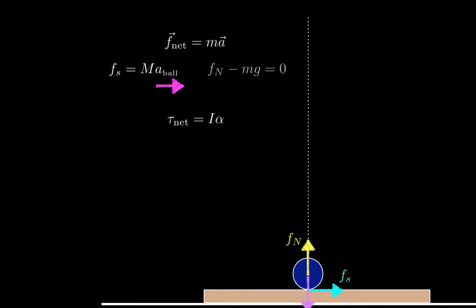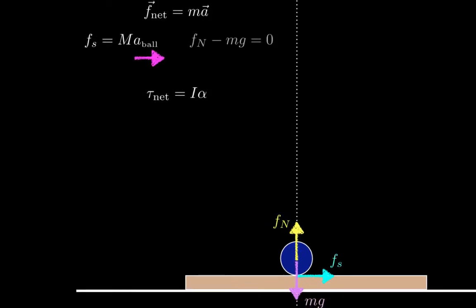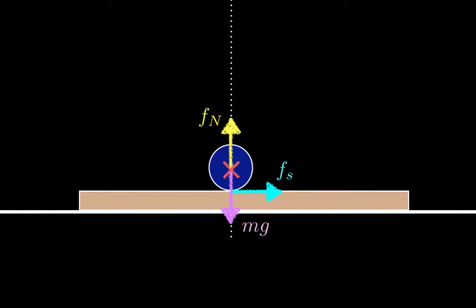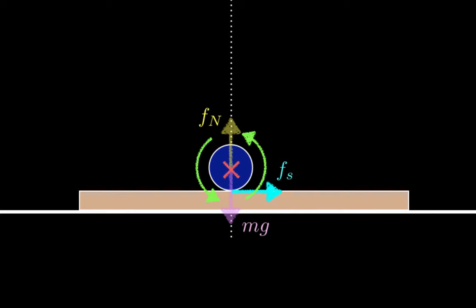Net torque equals I alpha will tell about the direction of rotation. Picking the center of the ball as the axis of rotation, the only force causing a torque is the frictional force, because mg and the normal force act at the axis of rotation. The frictional force makes the ball want to rotate counterclockwise, so that's the direction of the rotation.